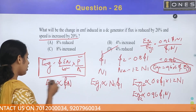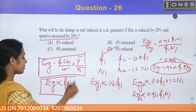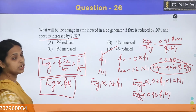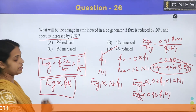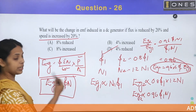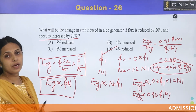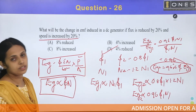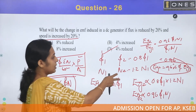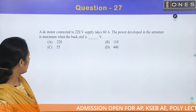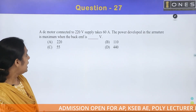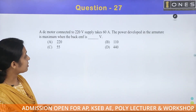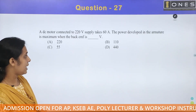This is the EMF relationship: generated voltage is proportional to φ × N — the product of flux and speed is proportional to the generated voltage.